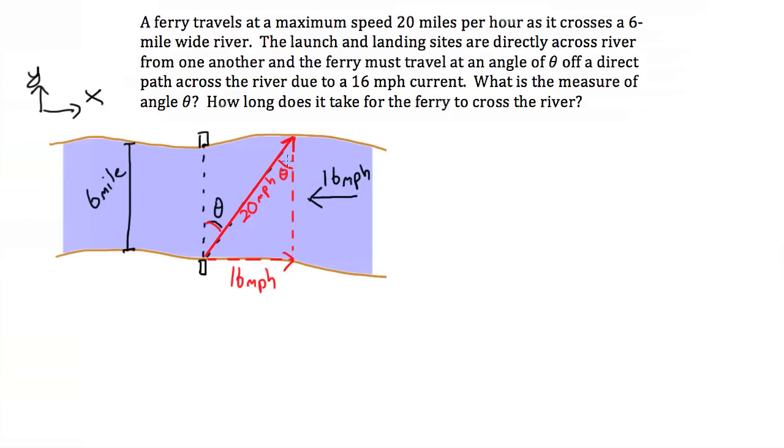That means that the x component of this velocity vector is also equal to 20 sine theta, because this is the side opposite theta. And the y component would be 20 cosine theta.